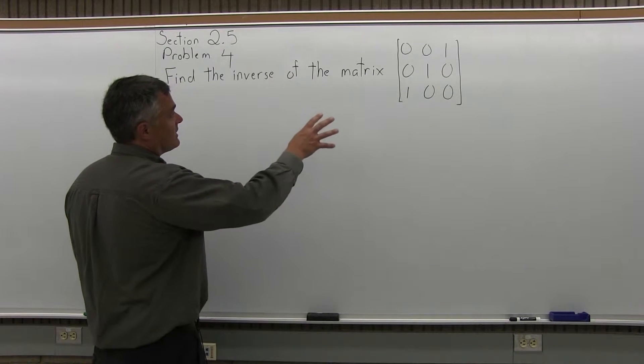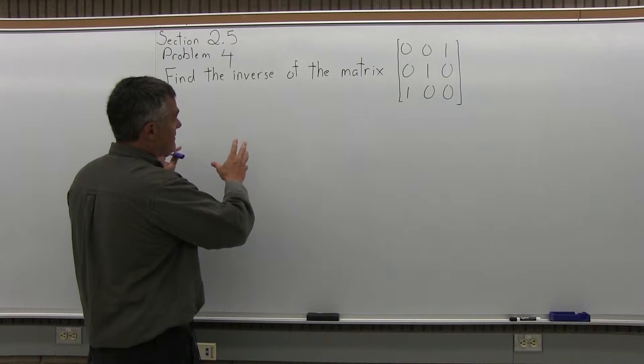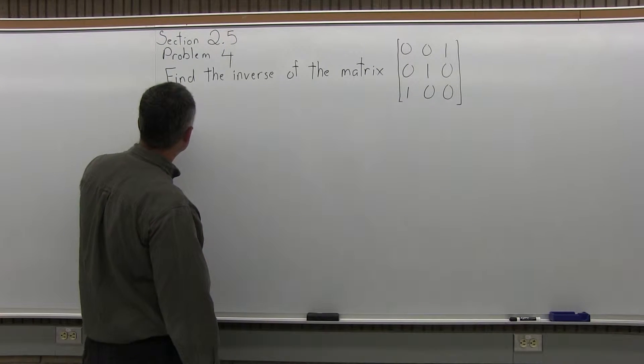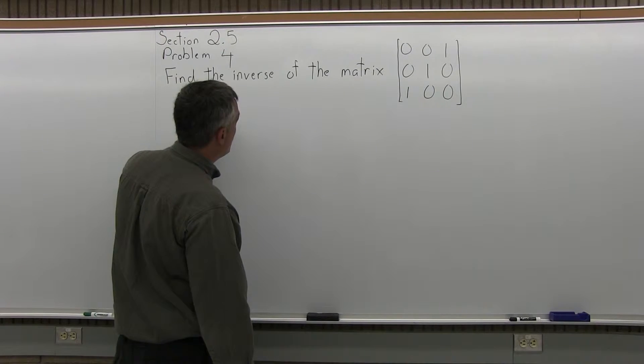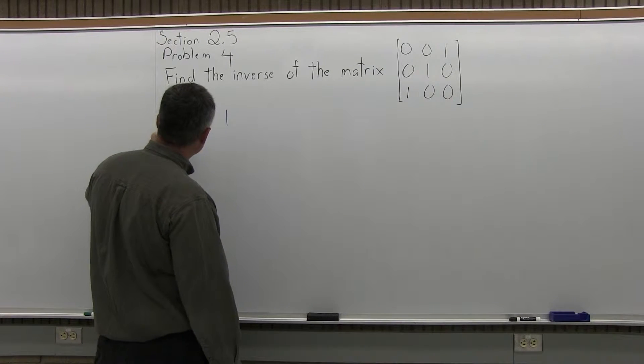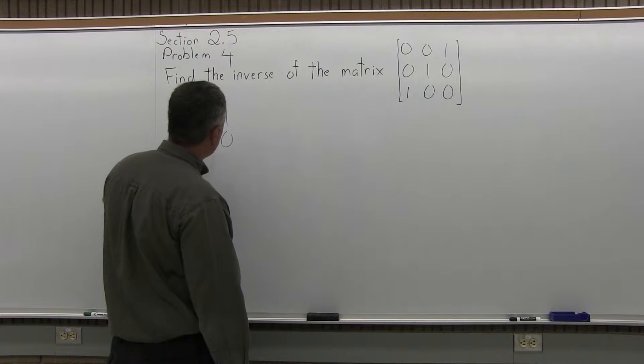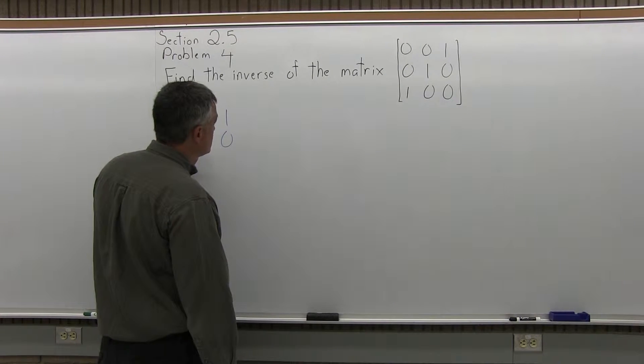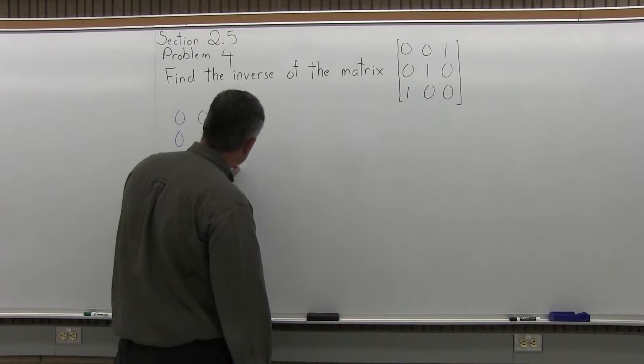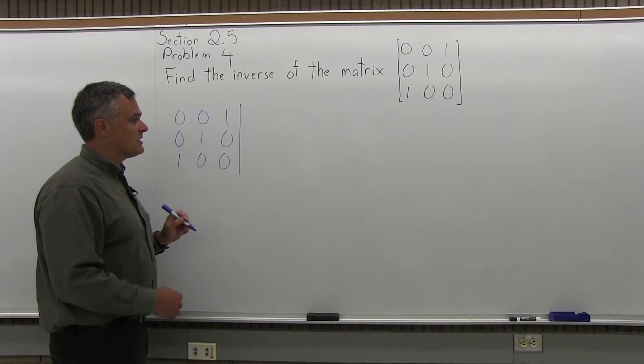So we're going to start with writing the given matrix as the left half of a double matrix. So the top row is 0, 0, 1. The middle row is 0, 1, 0. And the bottom row is 1, 0, 0. So that's the left matrix of a double matrix.